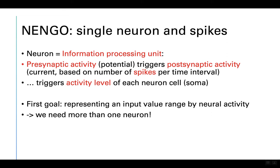Let's start with a single neuron. The neuron is the basic information processing unit in neural models. We have presynaptic activity which triggers postsynaptic activity in different ways — each neuron has its own way. Presynaptic activity triggers the activity level of each neuron.